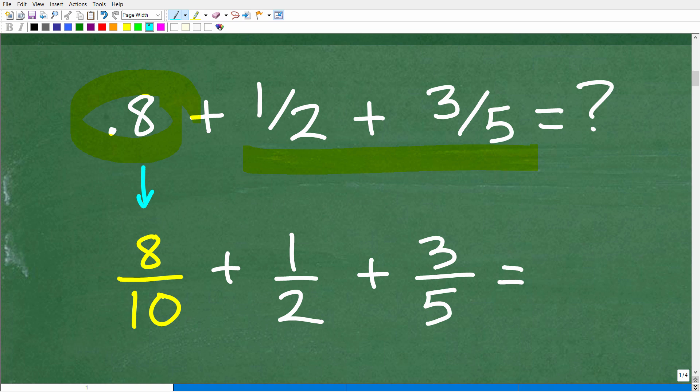Well, it's just easier to convert this one decimal into a fraction. Because if not, we're going to have to convert each of these fractions into decimals. Now, one half, it's not too difficult to convert. That's just 0.5.